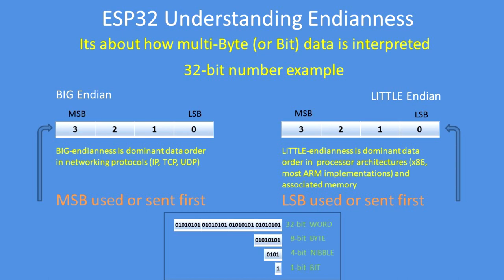Here's a 32-bit number example. The easiest way to think about this is how you interpret the data. If it's Big Endian data, you take the most significant byte first. If it's Little Endian data, you take the least significant byte first. The same thing applies to bits, bytes, and words — for Big Endian you send the most significant bits first, and for Little Endian it will be the least significant bits or bytes first.